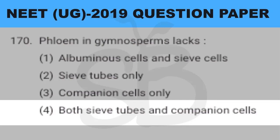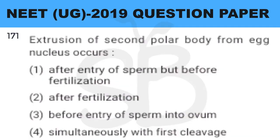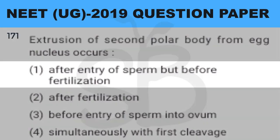Question number 171: extrusion of the second polar body from the egg nucleus occurs. The answer is option 1: after entry of sperm but before fertilization.